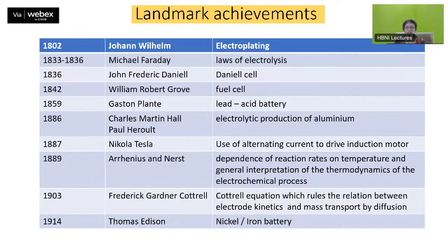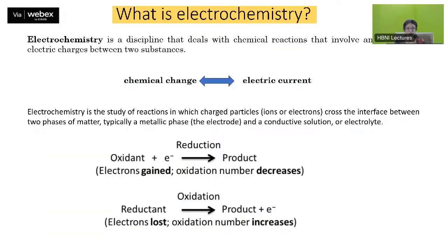Then of course the Nernst equation and Arrhenius equation, which describe the dependence of reaction rates on temperature and the general interpretation of the dynamics of electrochemical processes, were formulated in 1889. Then Cottrell came up with the famous Cottrell equation, which relates electrode kinetics and mass transport by diffusion, in 1903. And in 1914, Thomas Edison actually worked on the nickel and iron battery. So these are the landmark achievements in the field of electrochemistry.